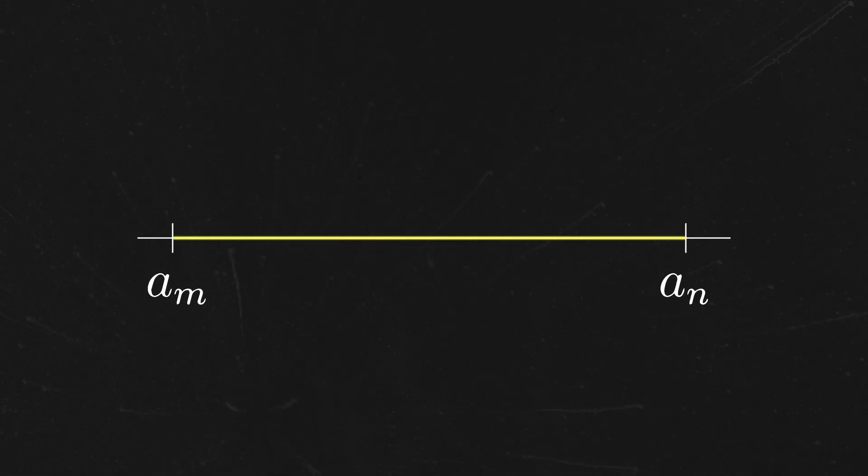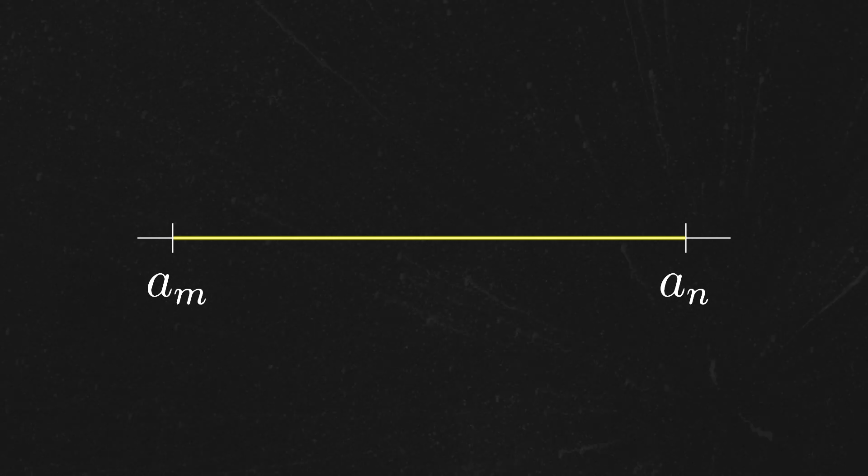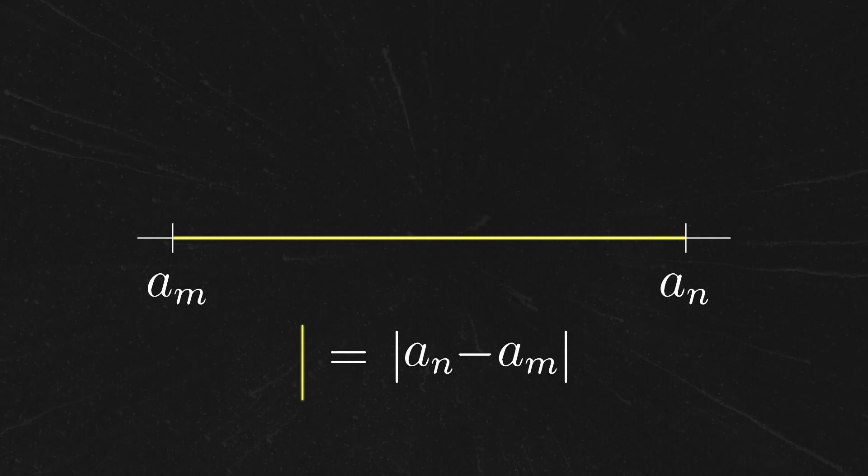And in the rational numbers, we can measure differences between points by taking the absolute values of their difference. That is, the distance from a_n to a_m is going to be the absolute value of their difference. And either one doesn't matter precisely because we're taking an absolute value. So, we'll always get a positive number.